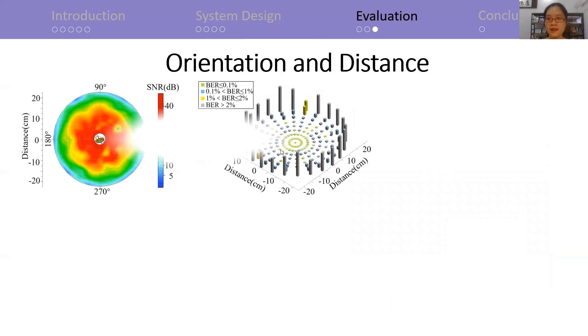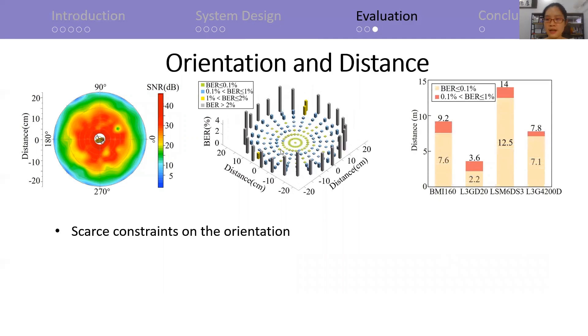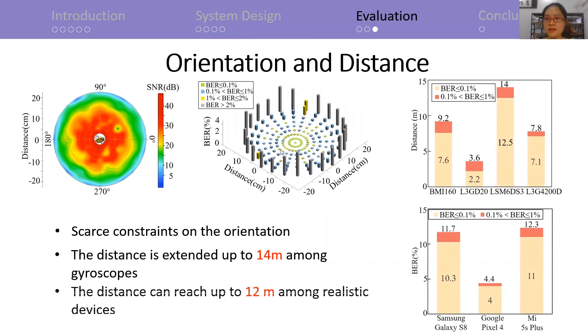For evaluating performance in different orientations, we rotate a 5-watt speaker around the gyroscope. The results of SNR and BER keep similar in all directions, which indicates flexibility on the placement. For evaluating communication distance, we raise the power of the speaker to 30 watts. It can reach up to 40 meters among gyroscopes and 12 meters among phones.